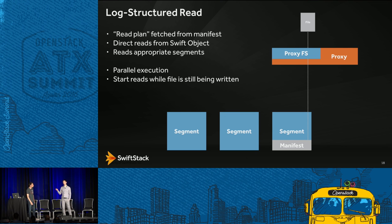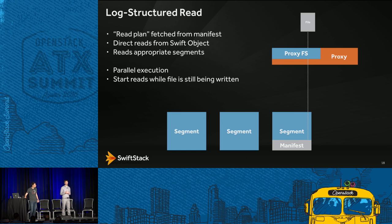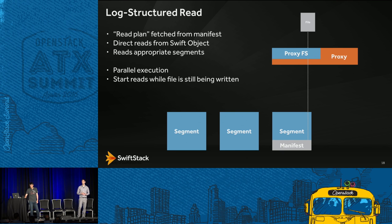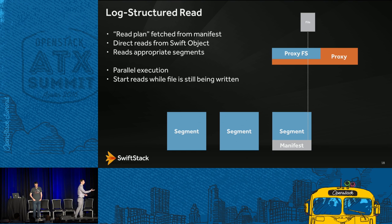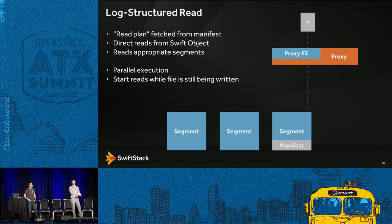To summarize: file system access involves seeks, tiles, and writes. When you seek to byte position 100 and write a few hundred bytes, we're not seeking to the middle of some object in Swift. We create a new object in Swift using the read-your-creates property, then update a manifest — just offsets pointing to where you go look. The manifest says: go back to the first segment, read these bytes; go read this new segment; go back to the first segment for the rest. Parallel reads across multiple segments improve performance when servicing a file request.